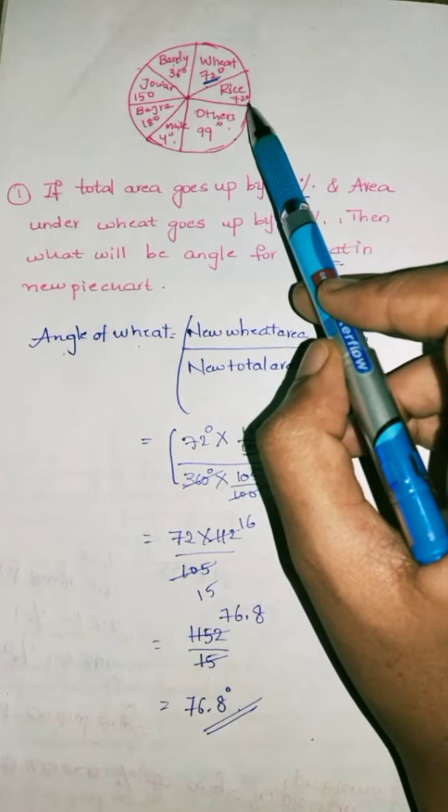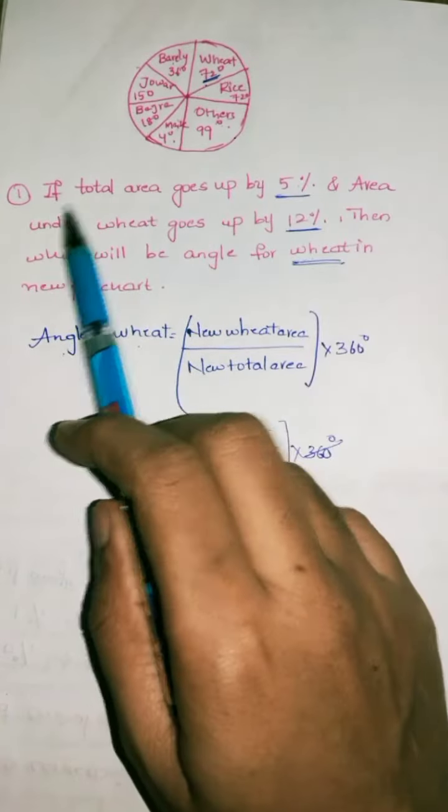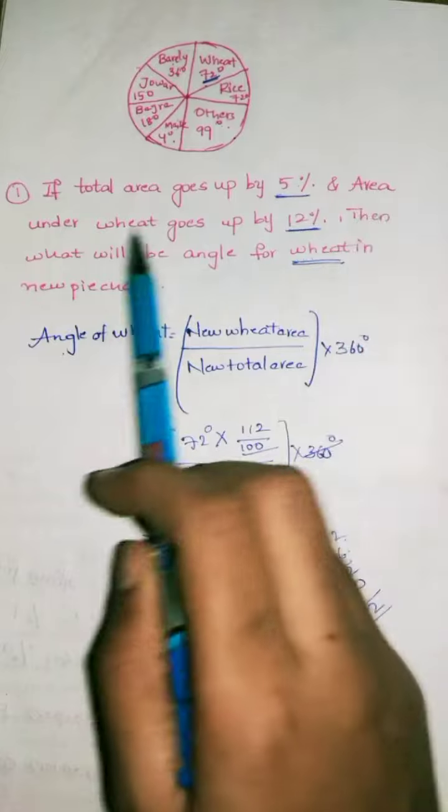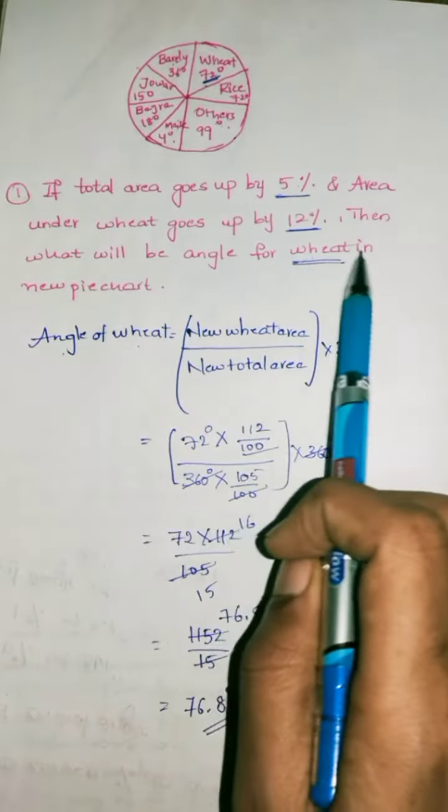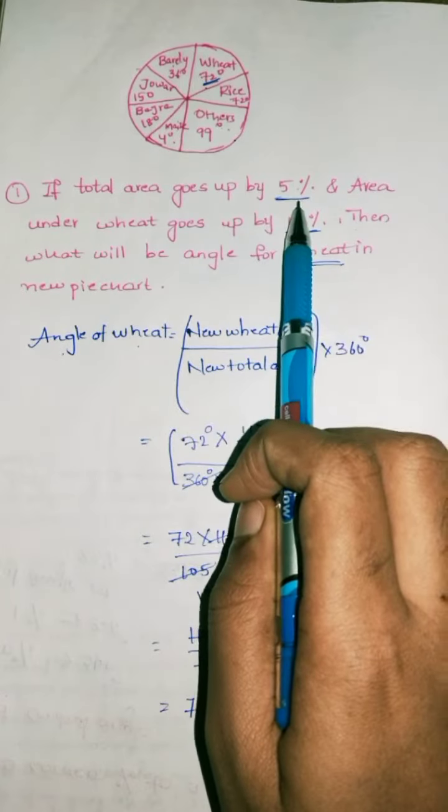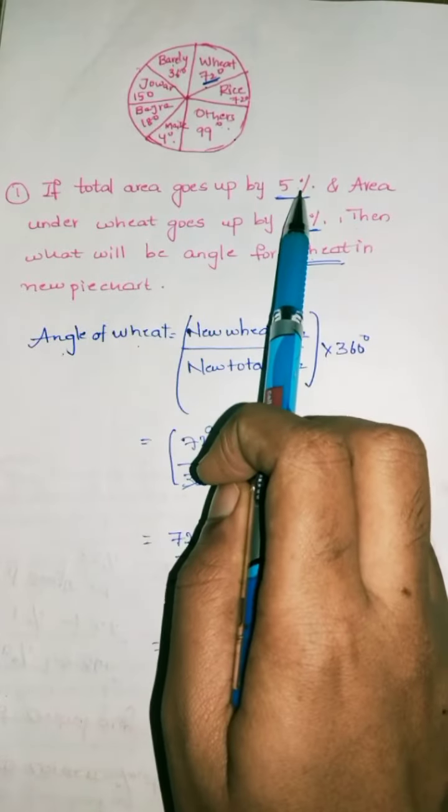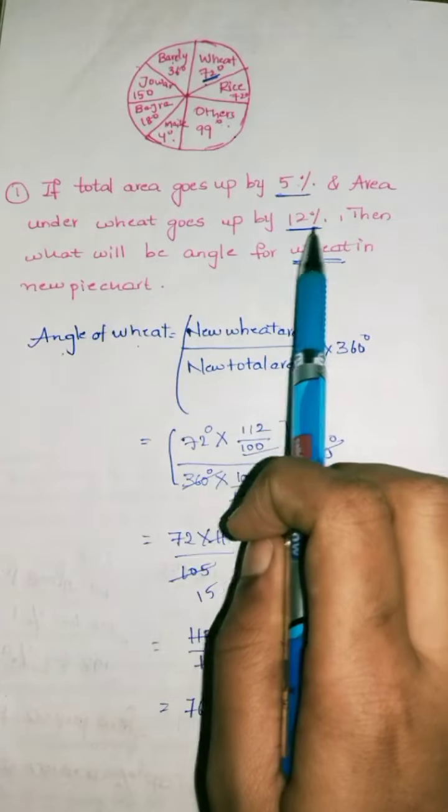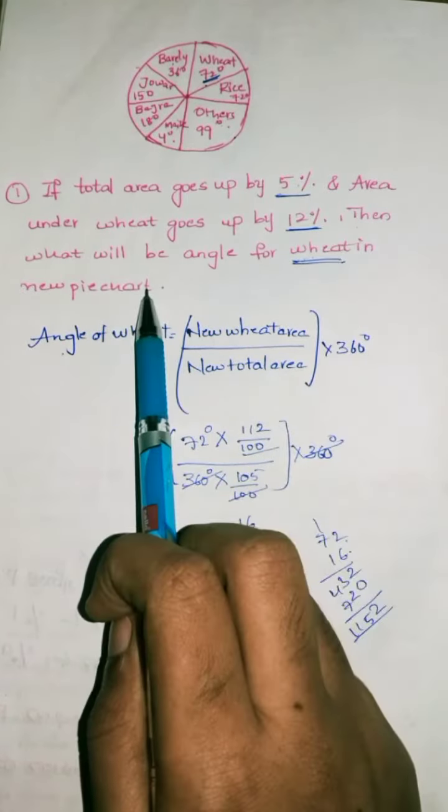I will deal with one question which I find difficult in the set of questions. If total area goes up by 5% and area under wheat goes up by 12%, what will be the angle for wheat in the new pie chart? Take care that it's given in degrees but asking in percent.